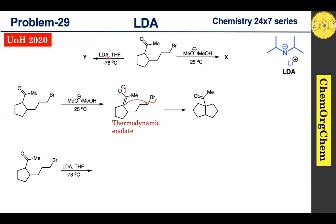Now let's move on to the second reaction condition — LDA. We have already discussed LDA on our channel previously; if you missed that, you can find the link in the description box below. LDA, or lithium diisopropylamide, is a non-nucleophilic, sterically hindered strong base that readily deprotonates acidic positions in a molecule. Generally, LDA is useful for the generation of enolate ions by abstracting protons from the less hindered site.